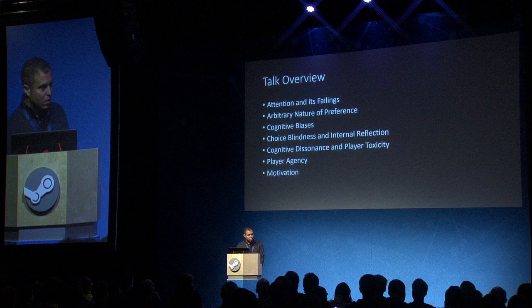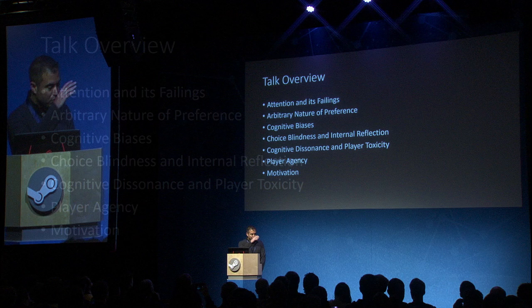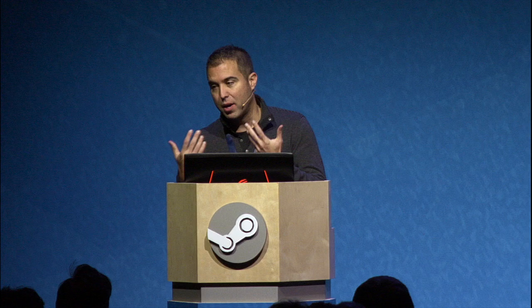Here's a roadmap for the talk. I'm going to go through seven distinct topics that should contain novel or surprising information about the ways players are reacting. We'll talk about attention and how preferences are made, a few cognitive biases, the fallibility of internal reflection, and our ability to rationalize why we do things. I'll give an example of how we used cognitive dissonance to reduce player toxicity in Dota, talk about player agency, and end with a discussion of motivation — how do we keep people playing and engaged?